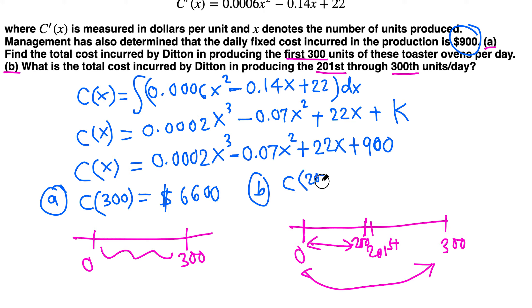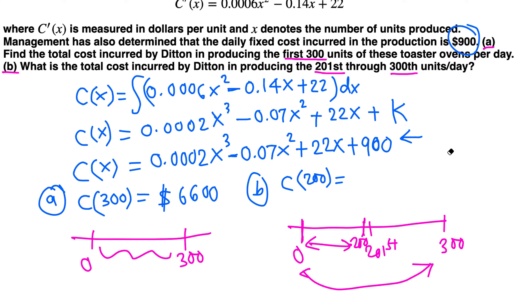Let's find the cost of producing 200. That means plug in 200 here in the total cost function. Plug in x equals 200. Use your calculator: 0.0002 times 200³. It comes out to be $4,100. But this is the cost of producing the first 200 units.